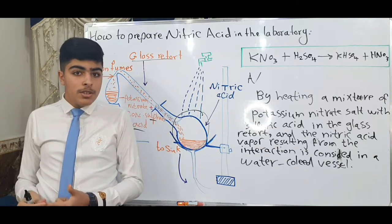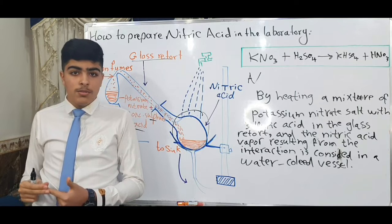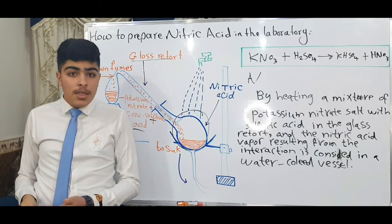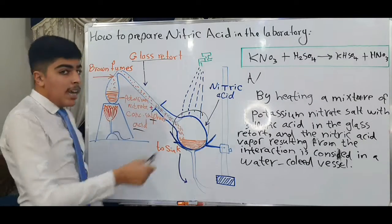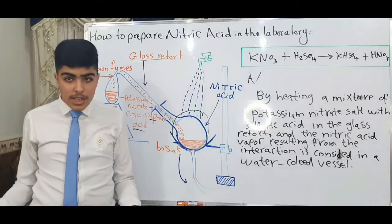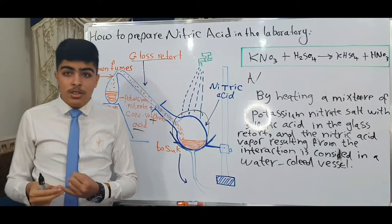Number two: it has acrid fumes. This is number two. Number three: the color of the impure acid, or the pure acid after leaving for a period of time, is yellow.